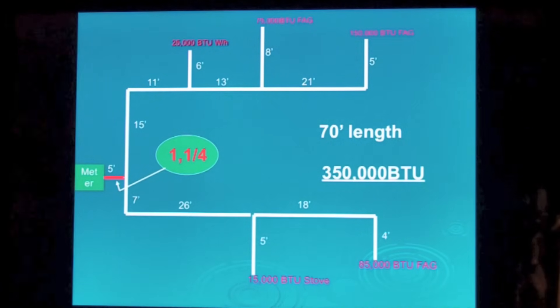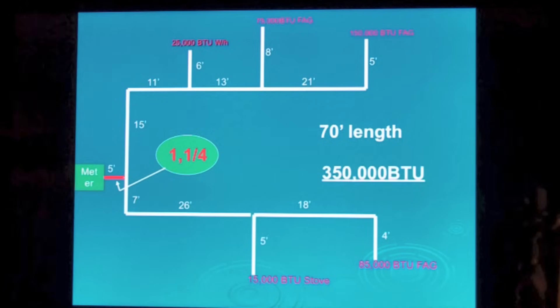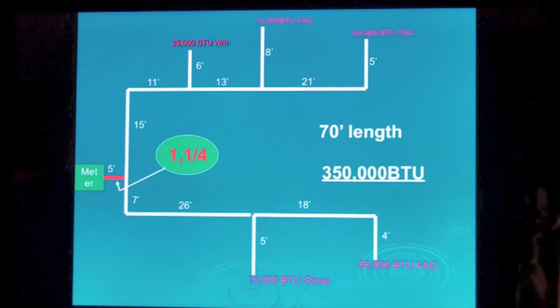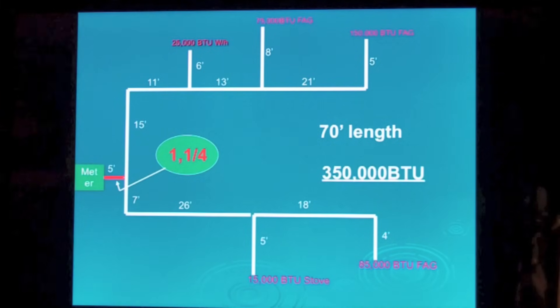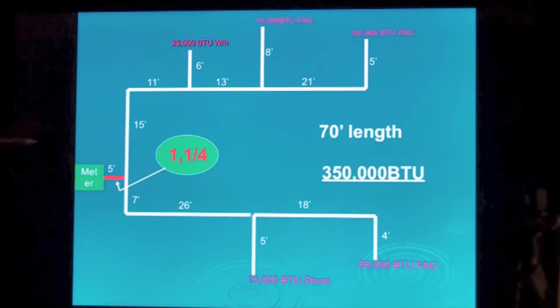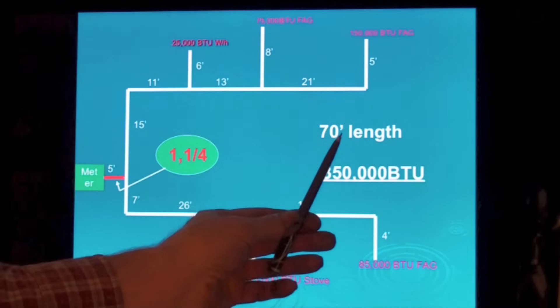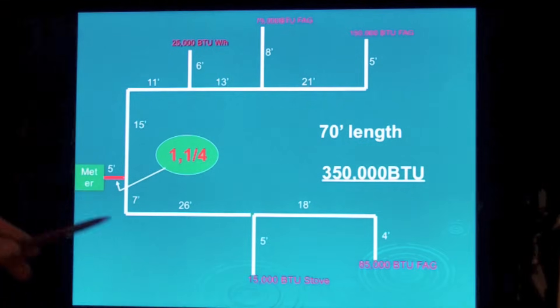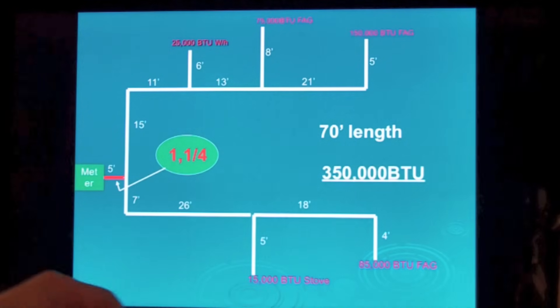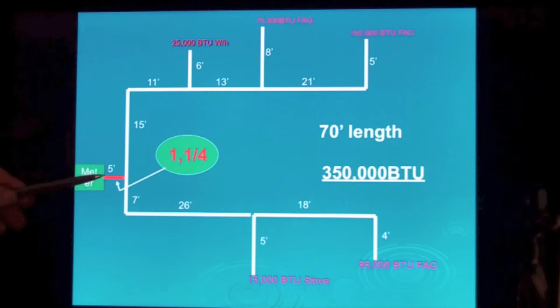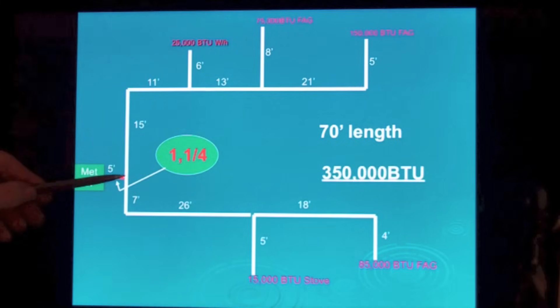Now if at any time you can't keep up with this, just stop it, go back, understand, and start again. 350,000 BTUs, 70 foot length was the longest length of branch, not the total of two together just the longest branch. So we have an inch and a quarter pipe going from the meter to this first tee.